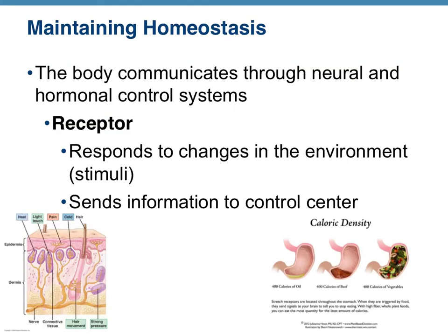There are three main parts to a homeostatic mechanism. The first is called a receptor. The receptor is what responds to changes — it's part of the nervous system, some sort of receiving part that recognizes and responds to an external stimulus.